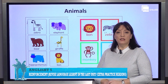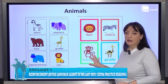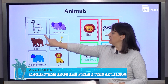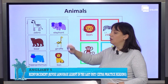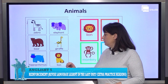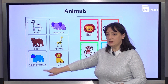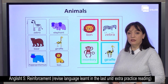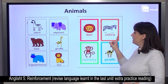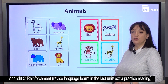What's the first thing we are going to revise? Animals. Do you remember the animals? Let's read them together. Zebra, elephant, bear, giraffe, hippopotamus, lion. Again: lion, zebra, monkey and giraffe.